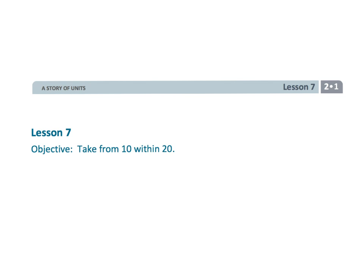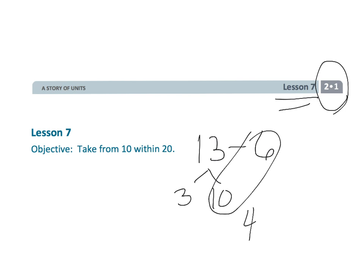And that wraps up Grade 2 Module 1 Lesson 7, where we're using a beautiful little strategy so that students can subtract 13 minus 6 in an easy, fast, efficient, and mental way.